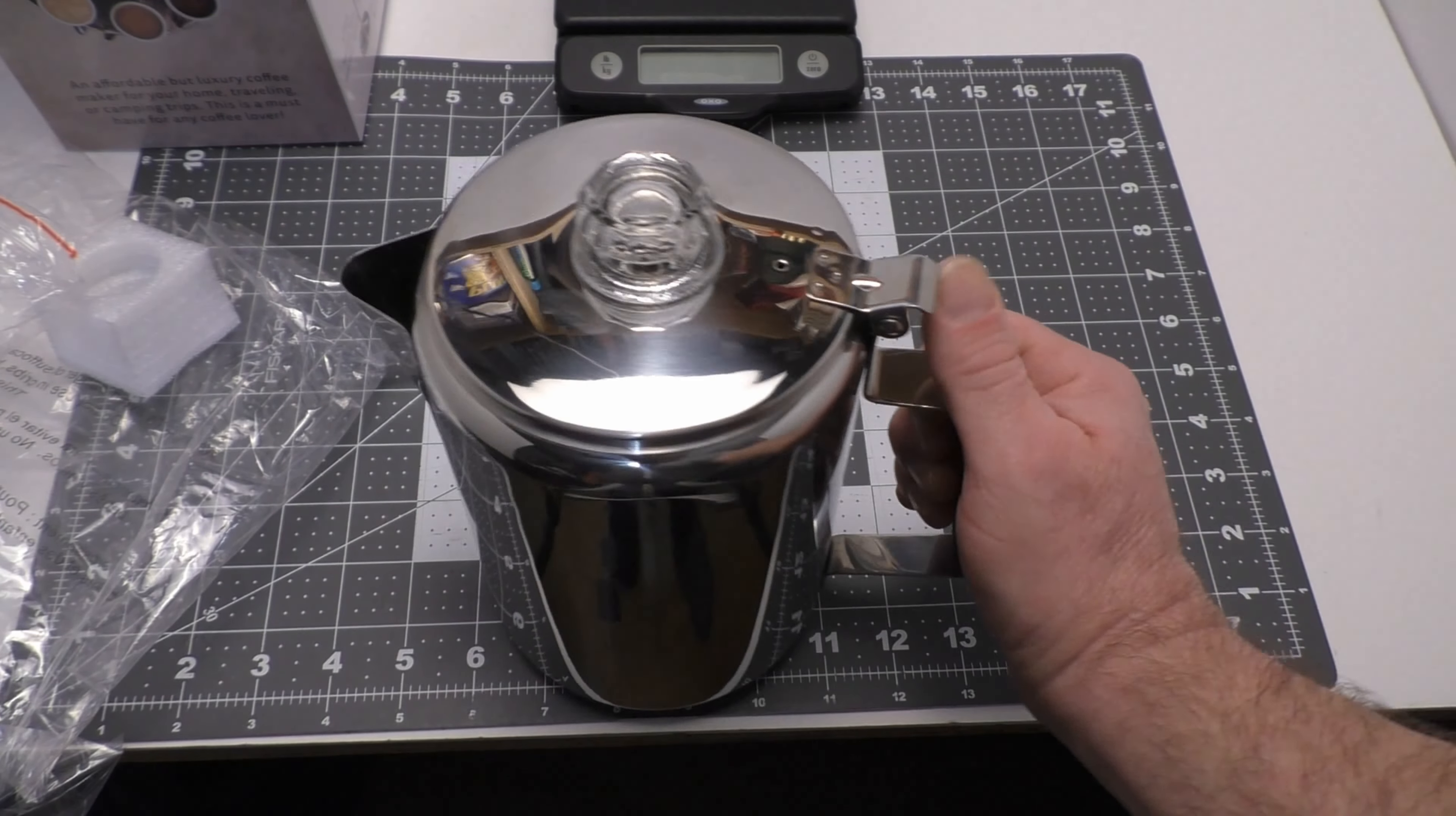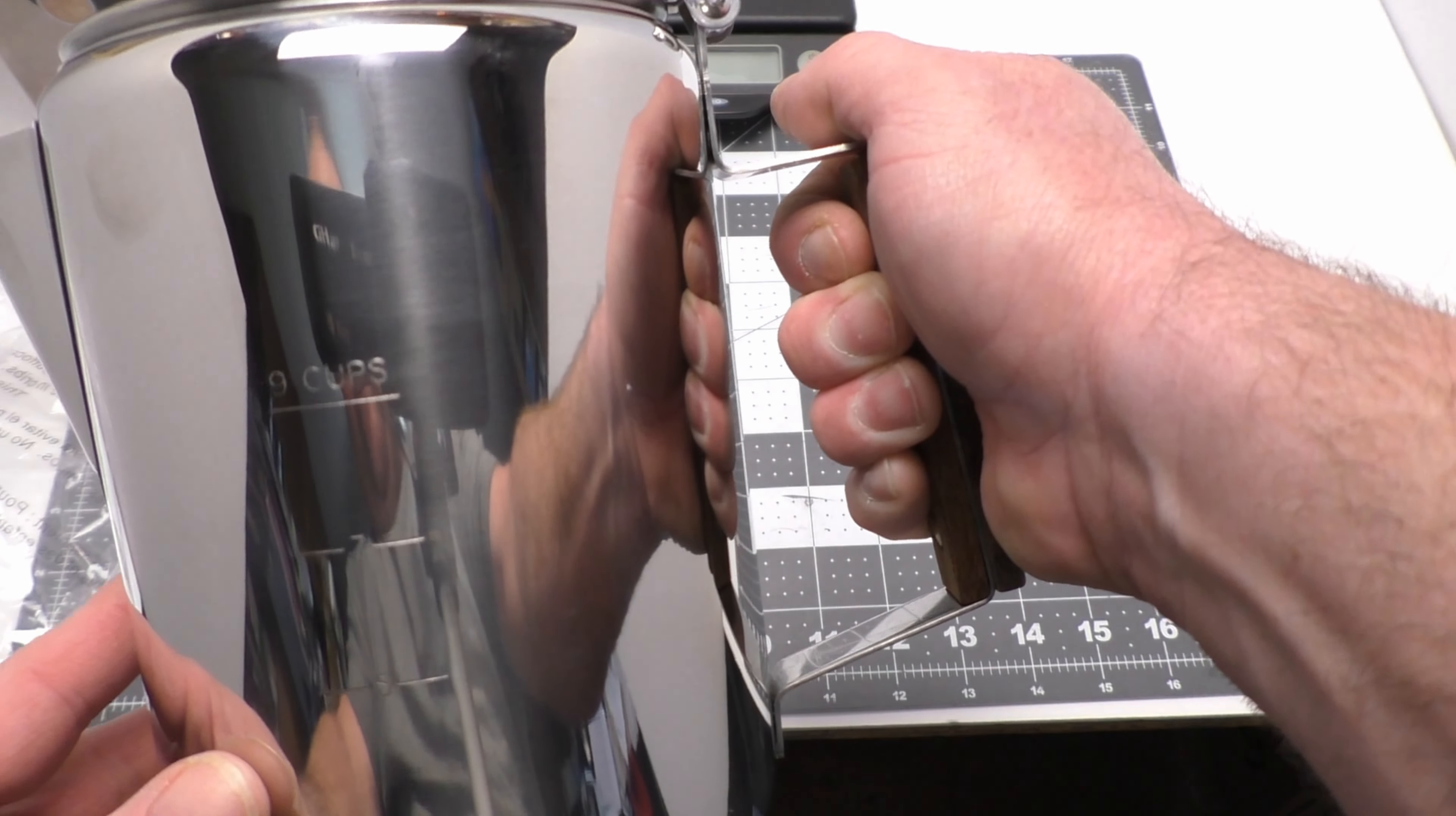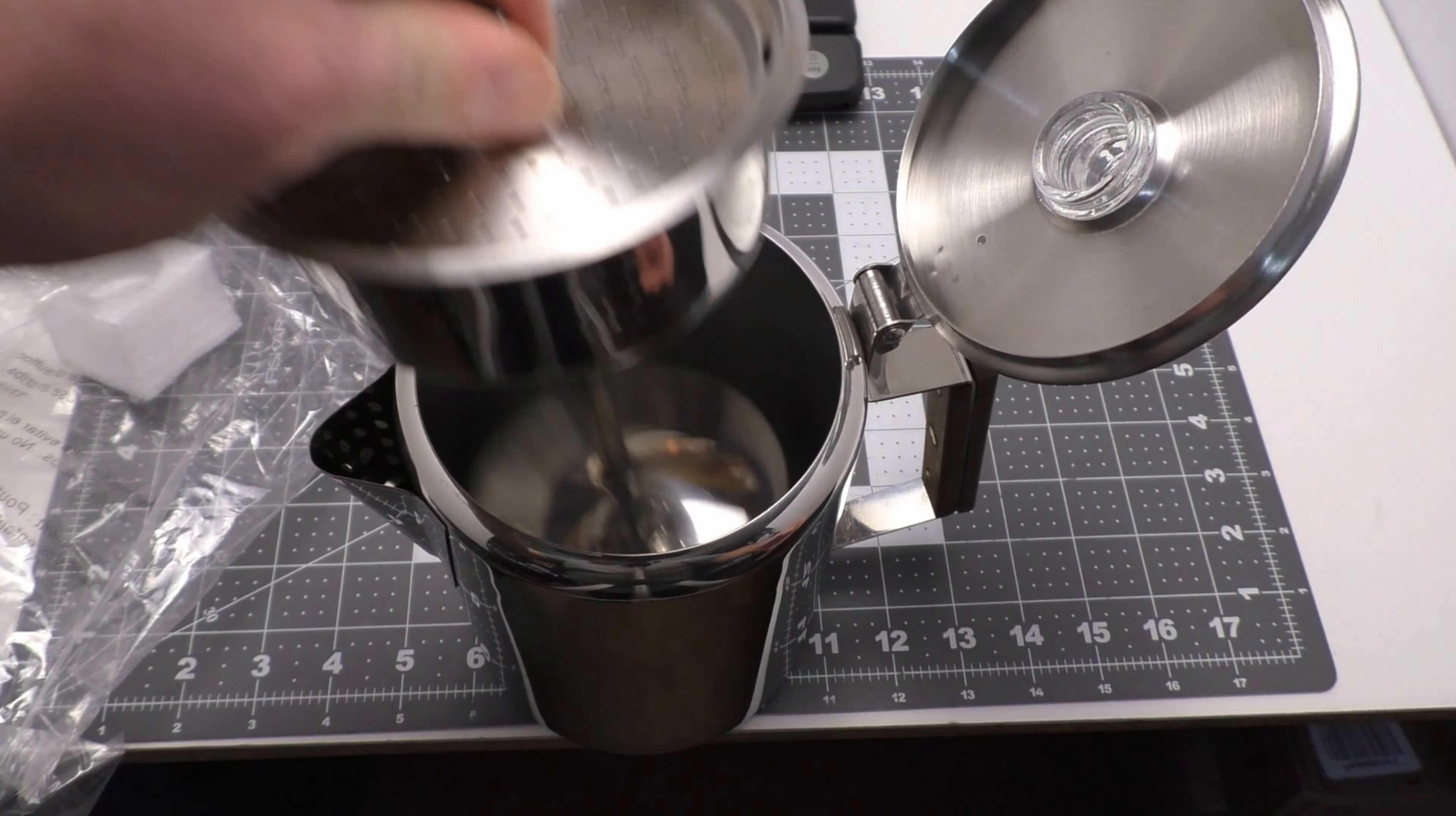Alright, there we go, that is our percolator. We have cup measurements here on the outside. It goes from 5, 7, to 9 right there. Let's see if we can see those on the inside.